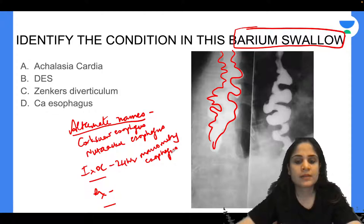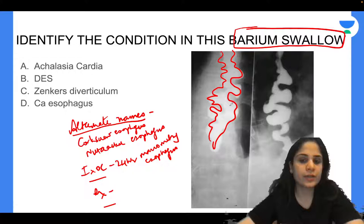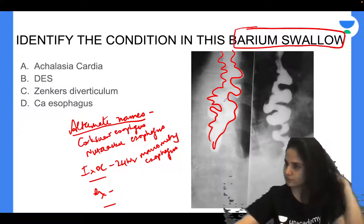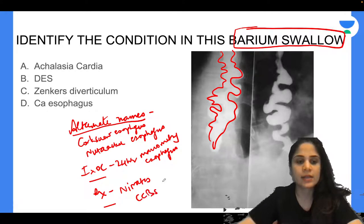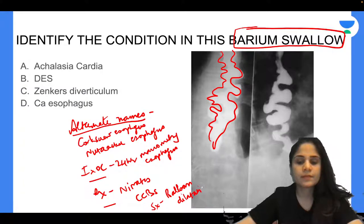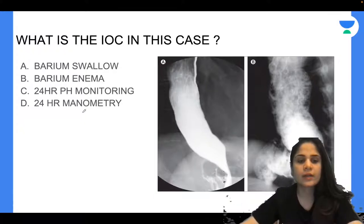The treatment for diffuse esophageal spasm involves reducing and relaxing the pressure in the esophagus. Medical treatment includes nitrates and calcium channel blockers. Surgical treatment involves balloon dilatation. The next question asks: what is the investigation of choice — barium swallow, barium enema, 24-hour pH monitoring, or 24-hour manometry?